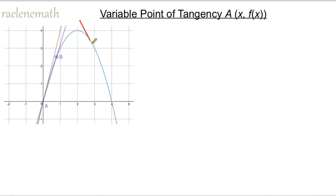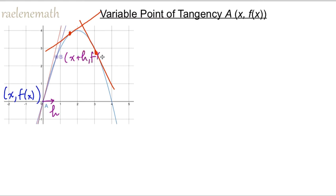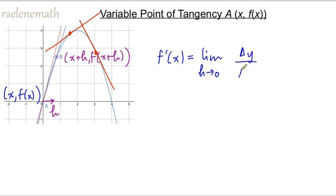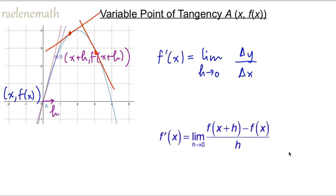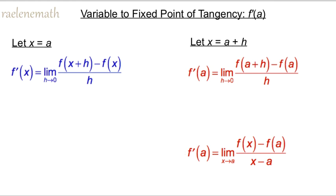Those last two versions had a fixed tangent point, but I might want the tangent slope at many different points, so I want my point of tangency to have variable coordinates. If I choose the coordinates of point A to be (x, f(x)) and give point B new coordinates (x plus h, f(x plus h)), then the derivative at point A is defined as f prime of x, given as the limit as h approaches zero of delta y over delta x. From the labeling we can see what delta y and delta x are, giving the final expression. So these are three variations on the limit definition of the derivative: the two red ones give numerical values of specific tangent slopes at specific points, while the blue one gives a formula for any tangent slope once we substitute the x-coordinate in.